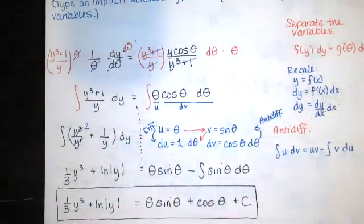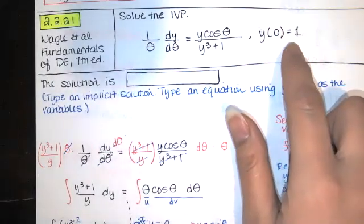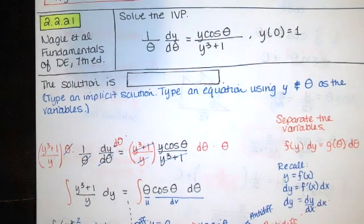In the last video I just stopped here, but I forgot about the initial condition. We have to use this initial condition in order to find the value of c. So I'm going to show you how to do that now.